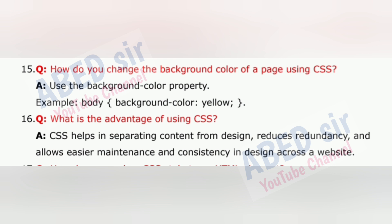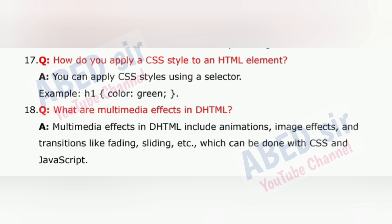Question 16: What is the advantage of using CSS? CSS helps in separating content from design, reduces redundancy and allows easier maintenance and consistency in design across a website. Question 17: How do you apply a CSS style to an HTML element? You can apply CSS styles using a selector. Example: h1 { color: green; }.